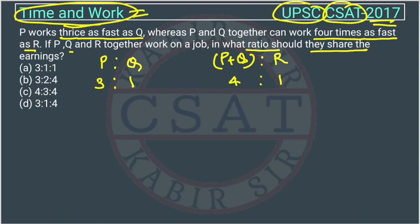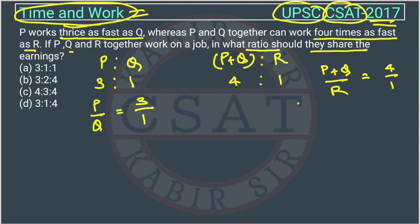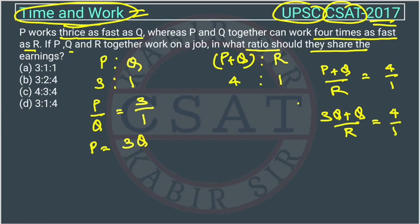I can solve it through ratio method only. So this will be like P plus Q upon R is equal to 4 upon 1. And from here, P upon Q is equal to 3 upon 1. P will become 3Q. So it will be 3Q plus Q upon R is equal to 4.